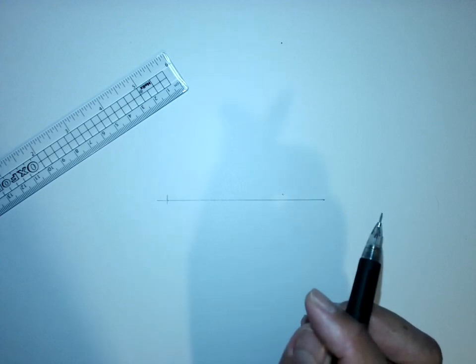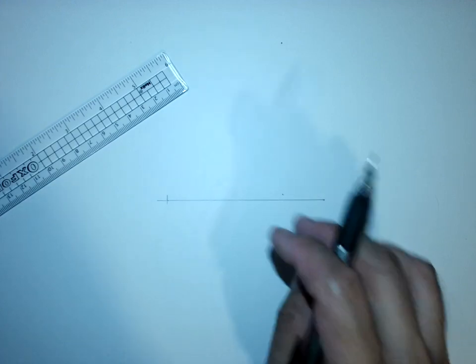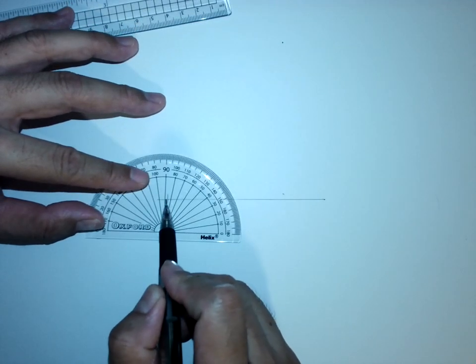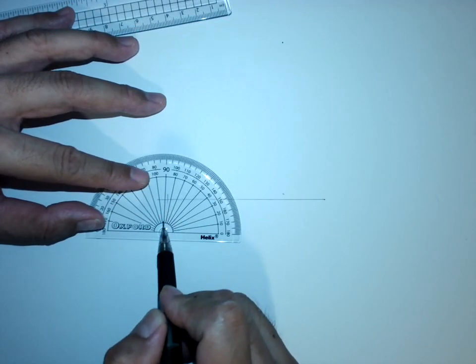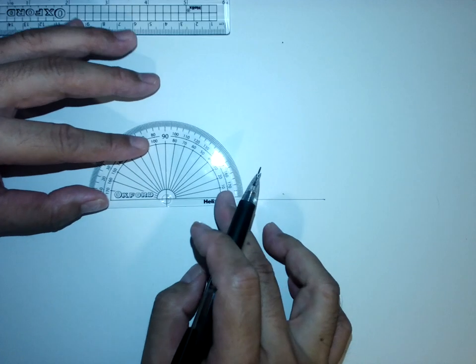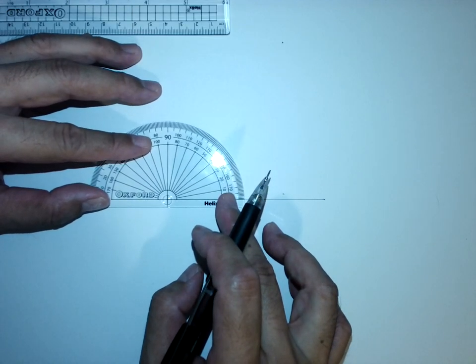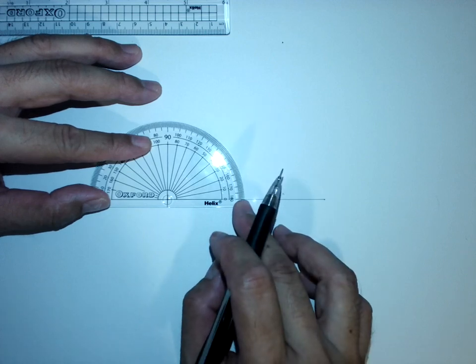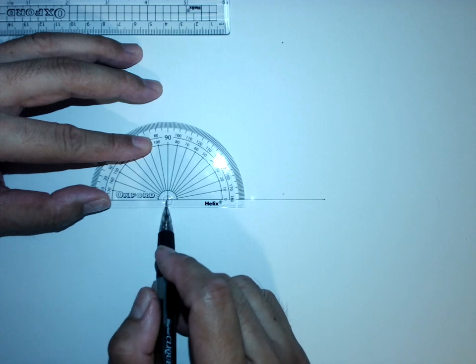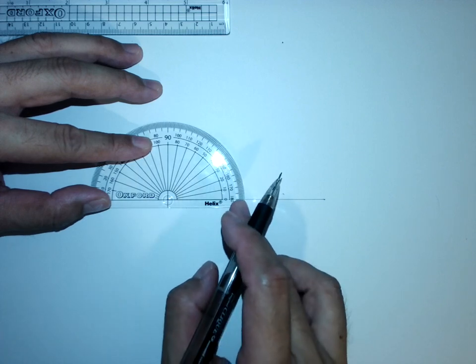When I put my protractor to measure 90 degrees, make sure the cross over here matches to this cross here. So what I do, put it down, make sure it's accurate, just adjust all the way until this cross covers the cross right behind.